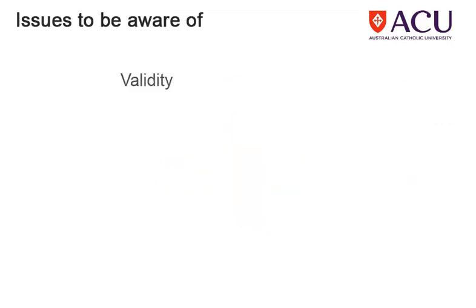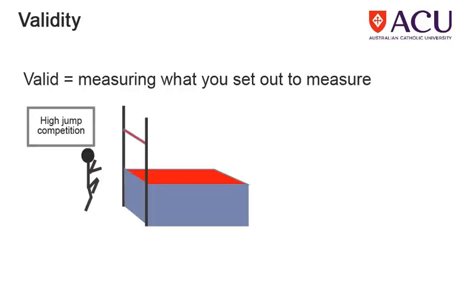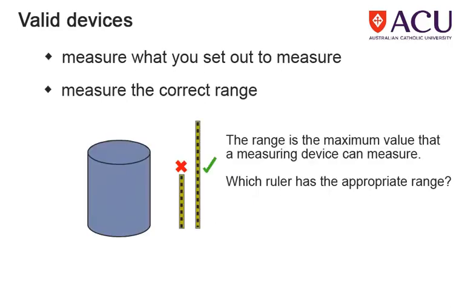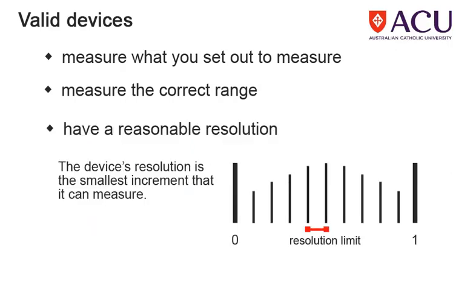We will discuss a range of related issues including validity, accuracy, reliability, and error. A measurement is valid if it measures what you actually set out to measure. Usually, we want to ensure that the measurement instrument creates a reasonable measurement, that it is within range and that it has an appropriate resolution.